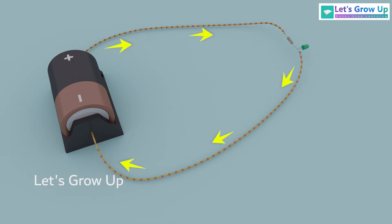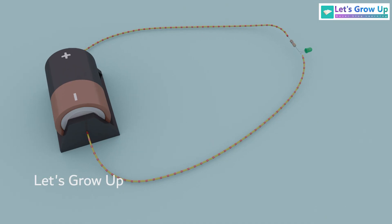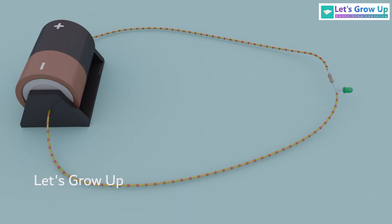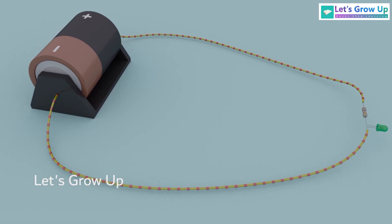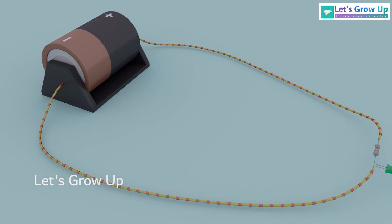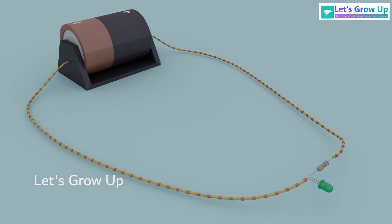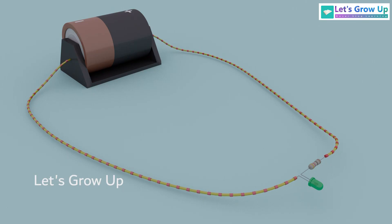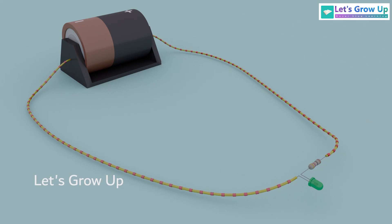A circuit is a closed loop or path where electric current flows. This is a simple example of a circuit where current flows from the battery to the resistor, then from the resistor to the LED, and finally back from the LED to the battery.